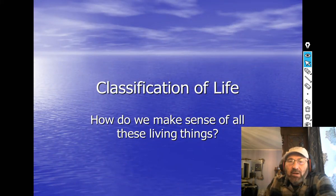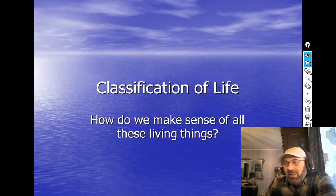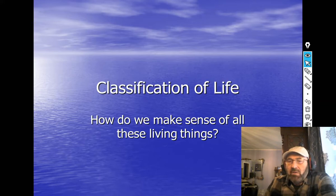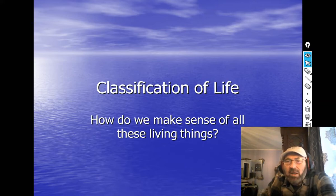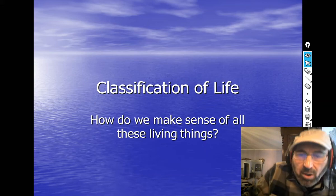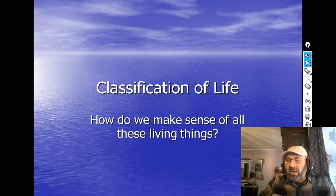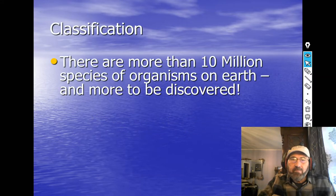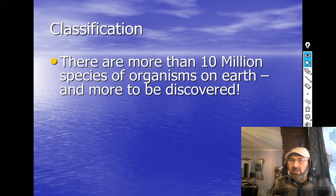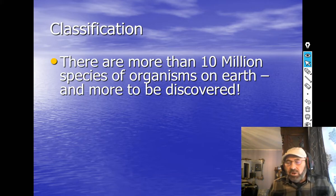Welcome to our discussion on the classification of living things. The idea here is how do scientists make sense of all the different kinds of living things on Earth? There are over 10 million different species of living things. How do you put them into some kind of order that everybody on Earth can talk about? We want scientists everywhere — in Russia, China, the United States, Brazil — to understand each other. And we're always discovering new ones.